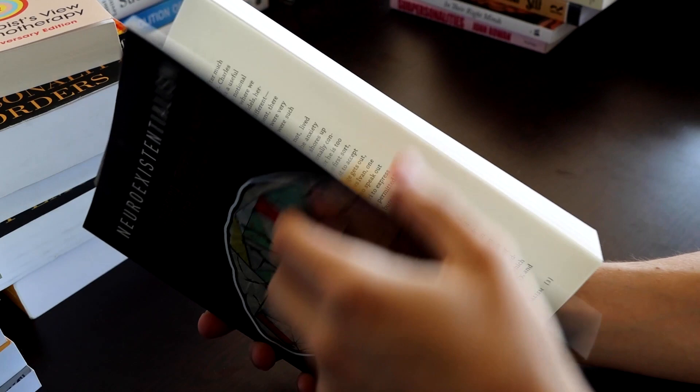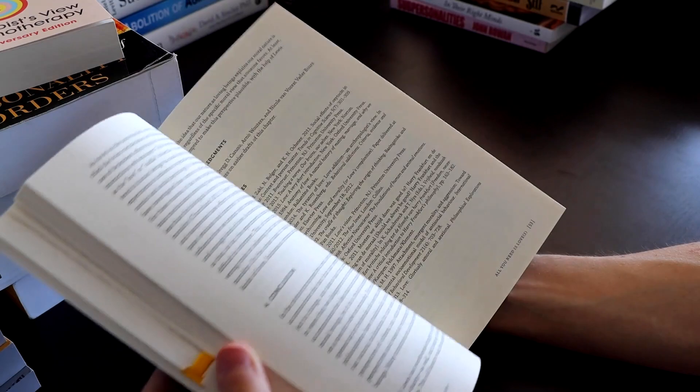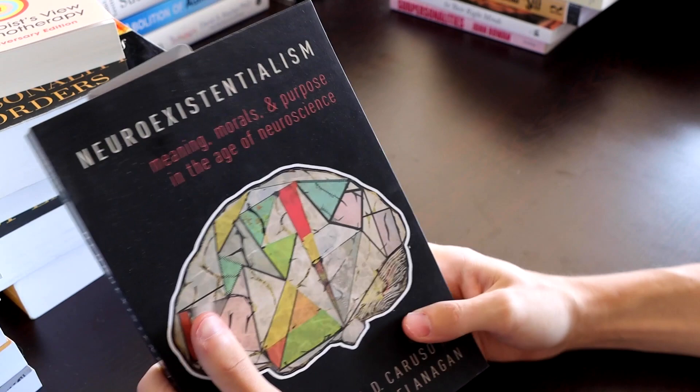Neuro-existentialism. So obviously I picked this one up because I wanted to look at what neuroscience has to say about existence, not just what neuroscience can tell us about the brain, but how our life should be impacted by neuroscience. And the cover alone should tell you: Meaning, morals, and purpose in the age of neuroscience. Super cool topic.